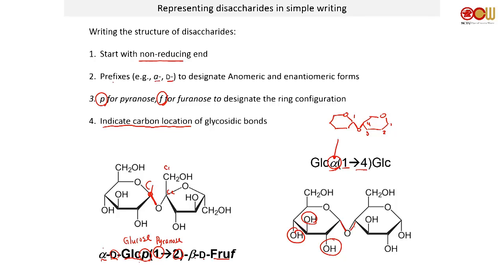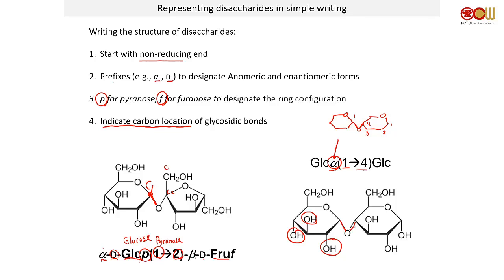When we talk about beta-1,4, it's going to be different. The question is: how are glycosidic bonds formed? It's a condensation reaction — it eliminates water between two molecules. You take two hydroxyl groups, and you end up linking them with an oxygen in the middle, kicking out a water molecule.